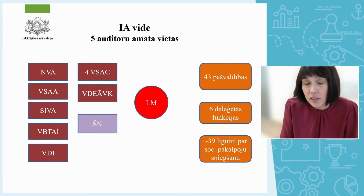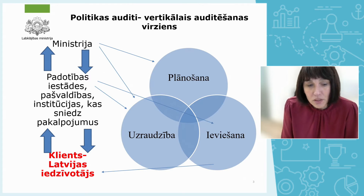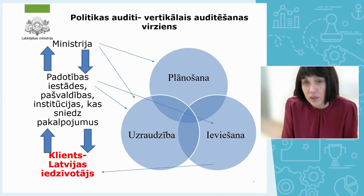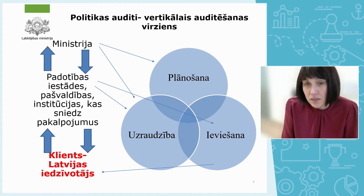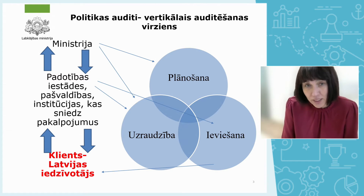Every year we have about 40 procurement social service agreements for four different target groups. Policy audit is different because we have to evaluate the full cycle of the policy based on three components: planning, implementation, and supervision. We have to look at them all together — we cannot separate them and audit one stage only. When doing that, we use the vertical method.